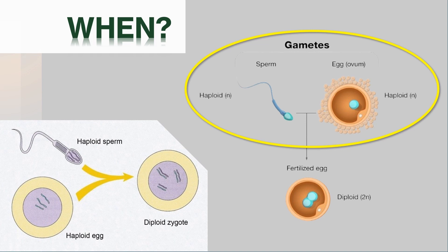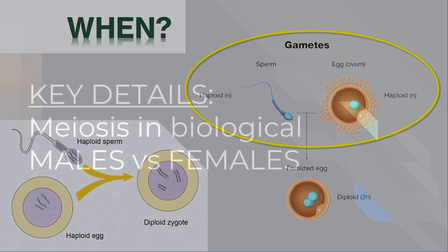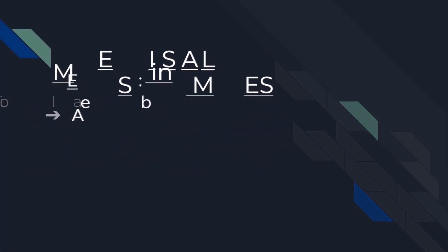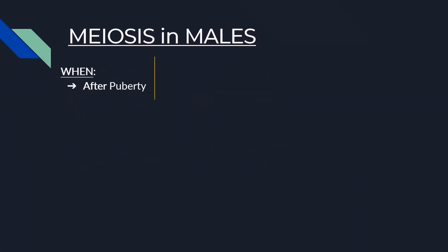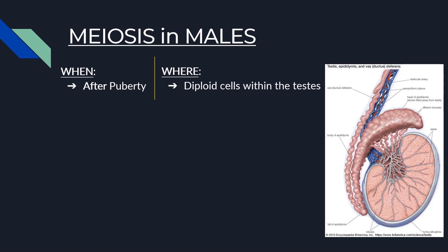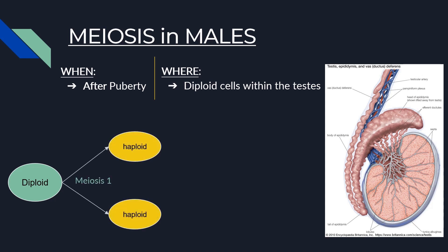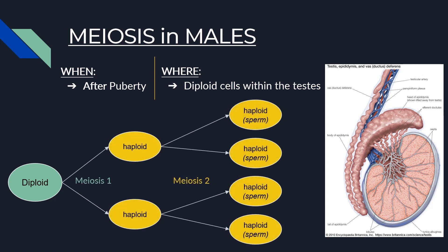Let's break down what meiosis looks like in a biological male compared to a biological female. In biological males, meiosis takes place after puberty in diploid cells within the testes. Those diploid cells undergo meiosis 1 to produce the initial two haploid cells, and then meiosis 2 to eventually produce the final sperm cells.